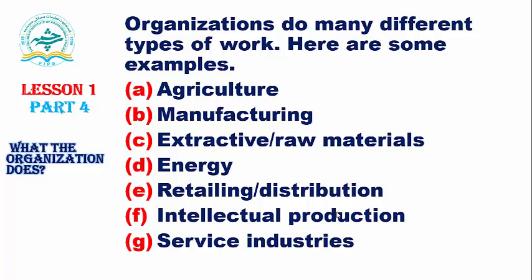Energy: organizations convert one resource like coal into another like electricity. Retailing or distribution: this type of organization delivers goods to the end consumer. Intellectual production: organizations producing intellectual property like software, publishing, films, music, and so on. Service industries: companies and organizations including retailing, distribution, transport, banking, various business services like accountancy and advertising, and public services like education, medicine, and so on.